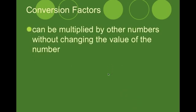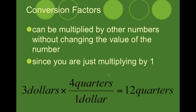Now, a conversion factor can be multiplied by other numbers without changing the value of the numbers. We have three dollars and we change it to twelve quarters. Three dollars and twelve quarters are still the same amount of money. Even though we've changed the number, the amount of money is still the same. All we have done is just gotten rid of dollars as a unit and put our new unit of quarters.